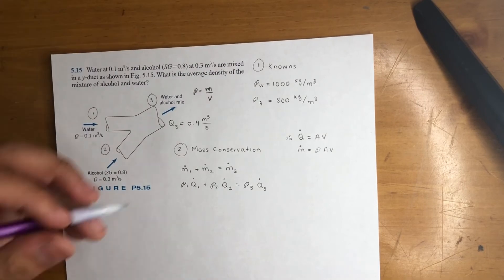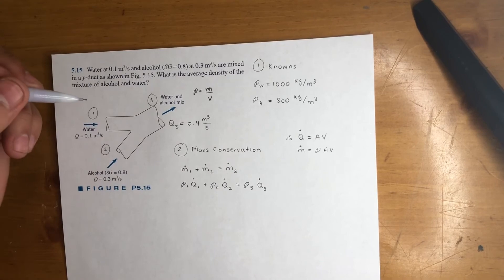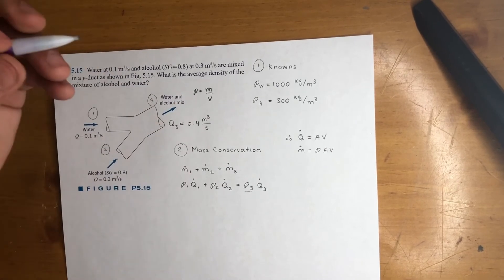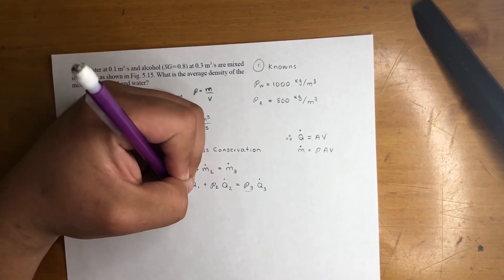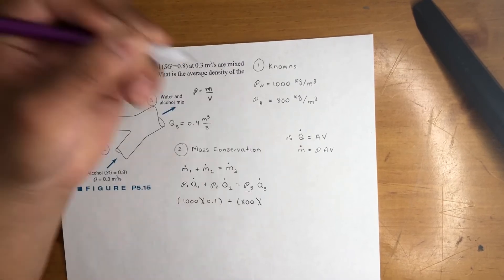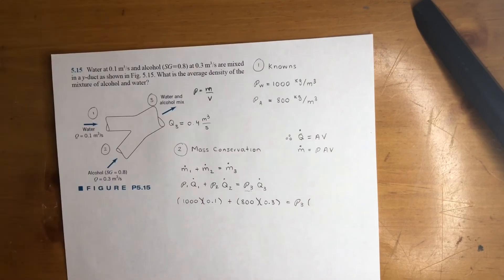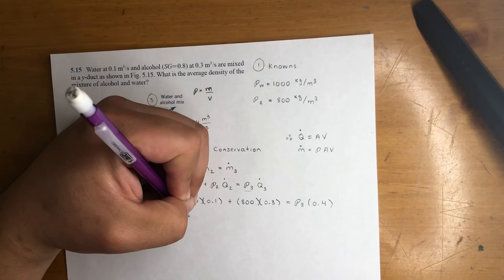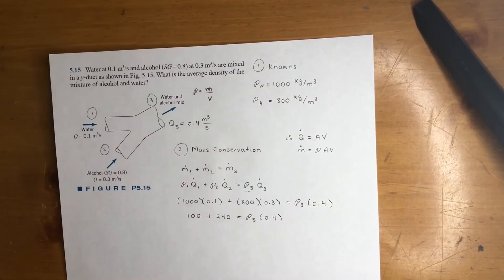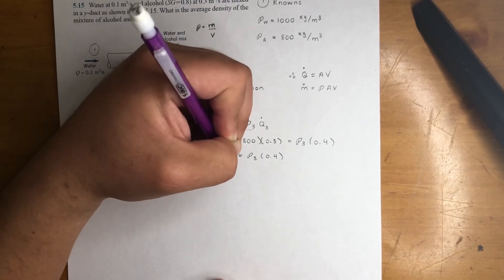Right, so cool. We go ahead and just plug and chug. We got density for water, which is 0.1. We got density for alcohol, which is 0.2. And we're looking for this density, so there's the unknown. We got q1 q2 q3. So we just go ahead and plug in. 1,000 times 0.1 plus 800 times 0.3 is equal to rho 3 times 0.4. Do the math here. You get 100 plus 240 is equal to rho 3 times 0.4. And then what else? You get 340 is equal to rho 3 times 0.4.